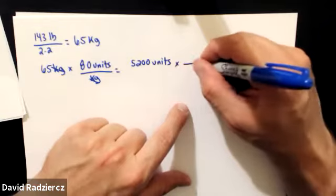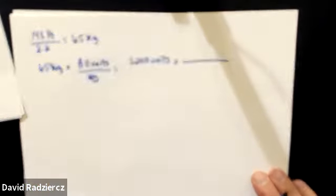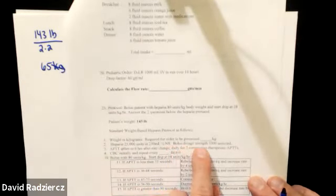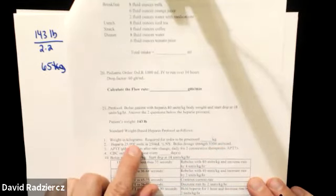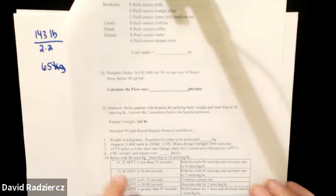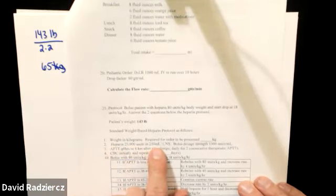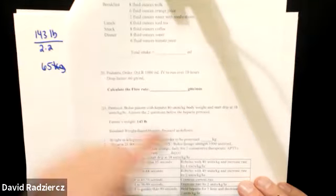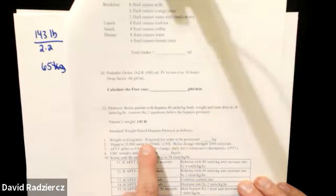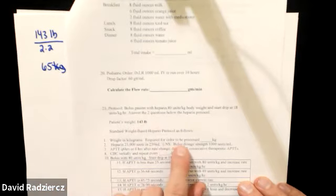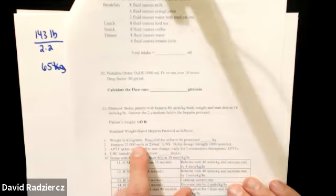If it asked for units we'd be done, but we want milliliters. So I convert units to milliliters using the bolus dose strength of 1,000 units per milliliter from the protocol. Using dimensional analysis and crossing out units, I get 5.2 milliliters.